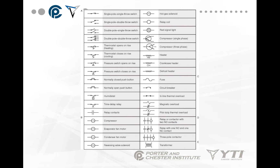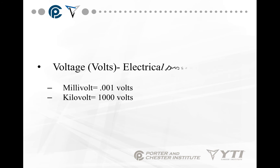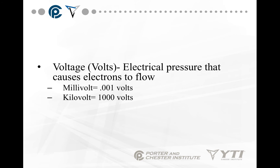Voltage is the electrical pressure that makes the electrons flow — it's a potential to do work. A millivolt is 0.001 volts.